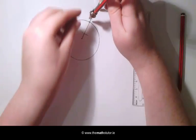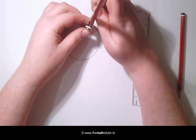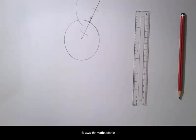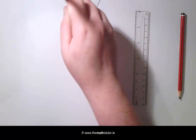Making sure our width is greater than the distance from the arc to the point A, we are going to draw an arc above the line. Placing our compass on the other arc, we are going to draw another arc above the line.